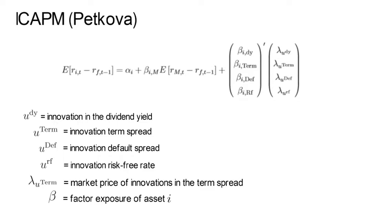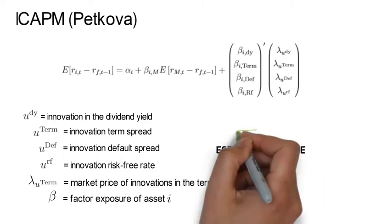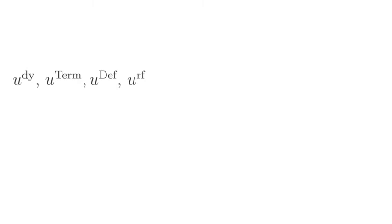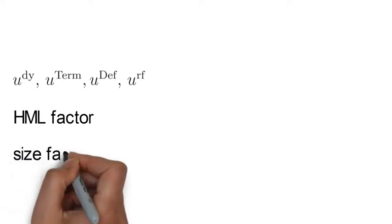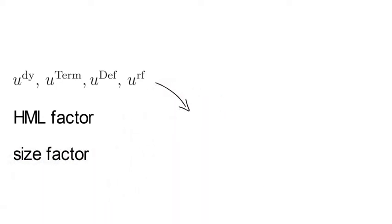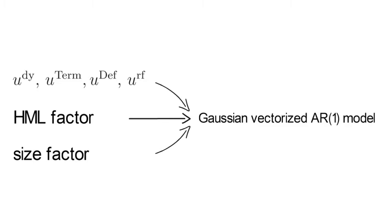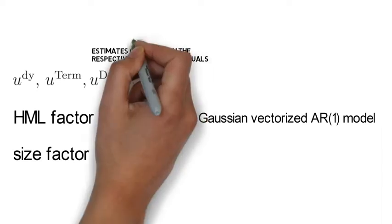Now, to implement such a model empirically, investors and risk managers have to estimate the surprise innovations. Petkova 2006 assumes that the dividend yield, the term spread, the default spread and the risk-free rate, as well as the HML factor and the size factor follow a Gaussian vectorized AR1 model. Therefore, the estimates of the u-terms, like u^DY, u^TERM, u^DEF and u^RF, coincide with the respective regression residuals.